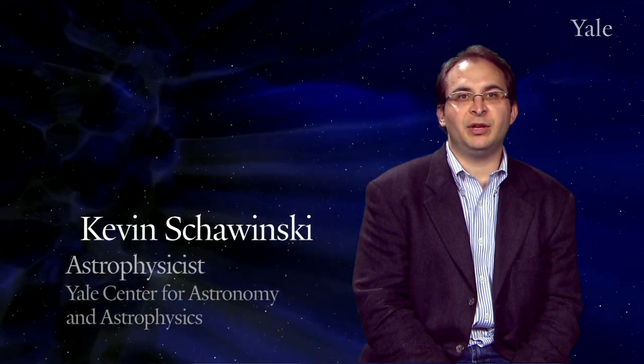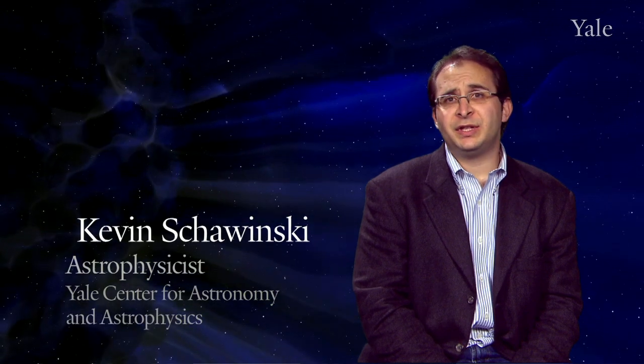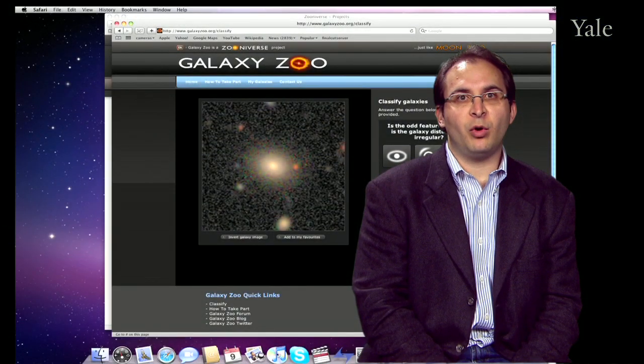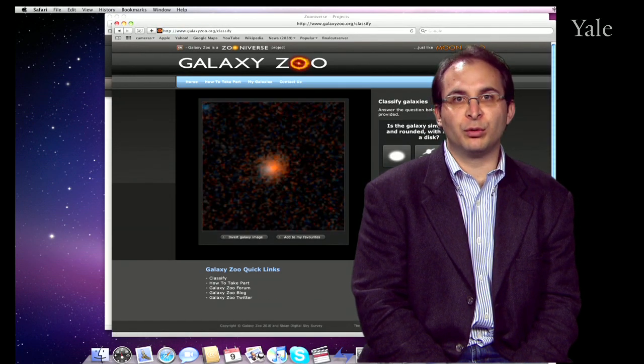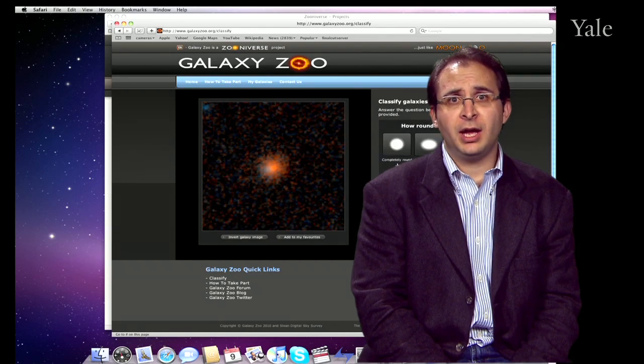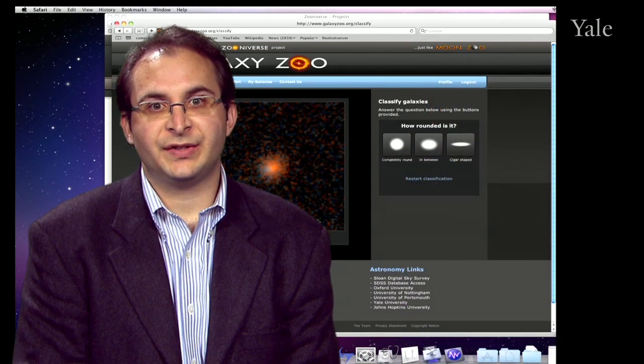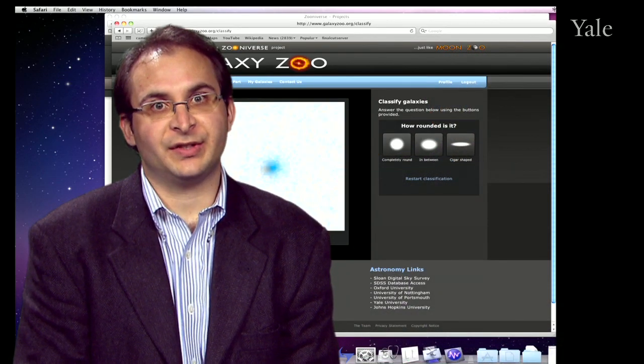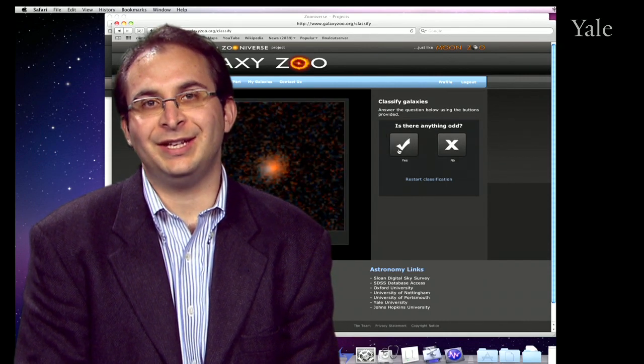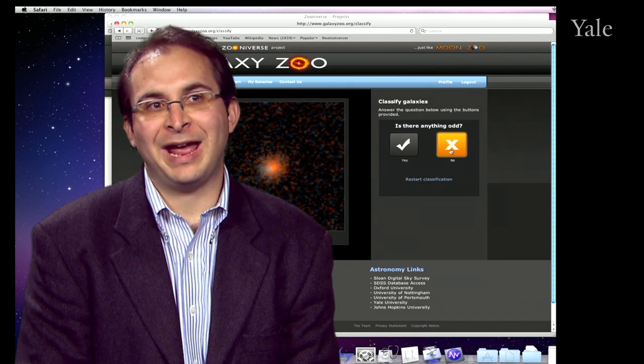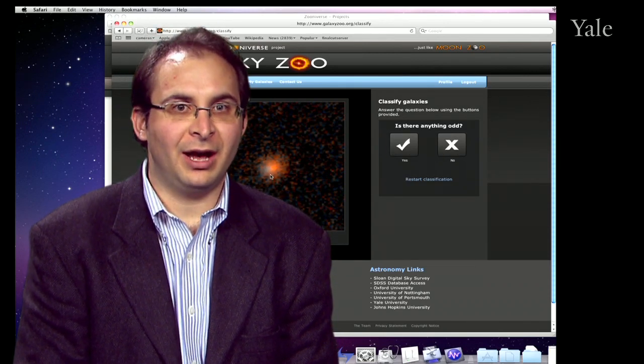Galaxy Zoo was the original citizen science project where we took images from a robotic telescope in New Mexico at Apache Point, which had taken data for over a million galaxies. The problem was, no one person or even team of scientists was able to really sort through all of them by hand and take a good look at what was out there. In recent years, data sets that astronomers and other scientists have been working with have gotten bigger and bigger, and so the old techniques of getting a few scientists together to sort through it by hand have been getting harder and harder.